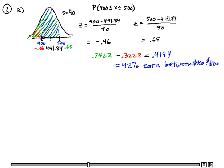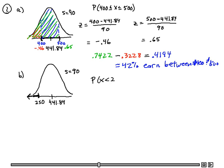Okay, for part B, again I have the same distribution, centered at 441.84, standard deviation of 90. And I want, for a randomly selected production worker, what is the probability that the worker earns less than $250 per week? So the probability that X is less than 250.